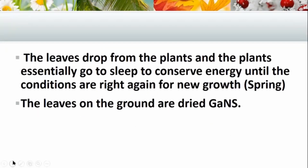The leaves drop from the plants and the plants essentially go to sleep to conserve energy until the conditions are right again for new growth in spring. As there are no leaves for the plants to gain new energies, they just have to conserve their energy throughout the winter period — they go to sleep and enjoy their winter rest, just like the hibernation of some bears. When we have the leaves on the ground, we essentially have dried GANS on the ground, because now that gap between the two surfaces of the plant has closed to such a degree that sometimes when you pick up those leaves you can see they just crumble in your hands. That's essentially dried GANS — the same as when you've dried some of your CO2 GANS, it just forms a nice powdery substance. That's what your leaves are as well when you crumble them up.